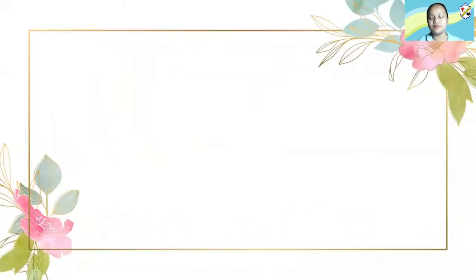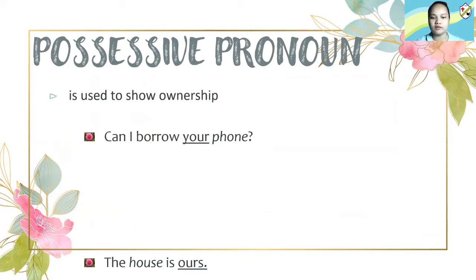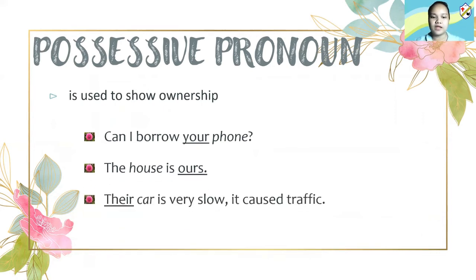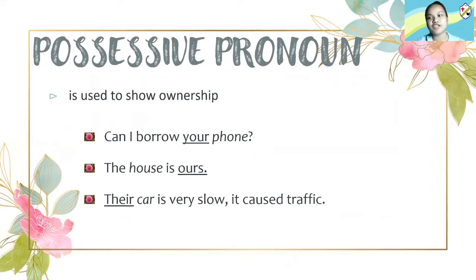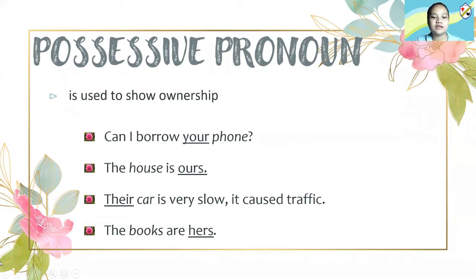As well as personal pronouns, we also use possessive pronouns. When we say possessive pronoun, it is used to show ownership. For example: Can I borrow your phone? Or: The house is ours. Their car is very slow — it causes traffic. The books are hers. Possessive pronouns that usually end with 's' — ours, hers, theirs — are usually after be verbs or linking verbs: is, are, was, were. And pronouns that don't end with 's' — your, their, my — are usually preceded by a noun.